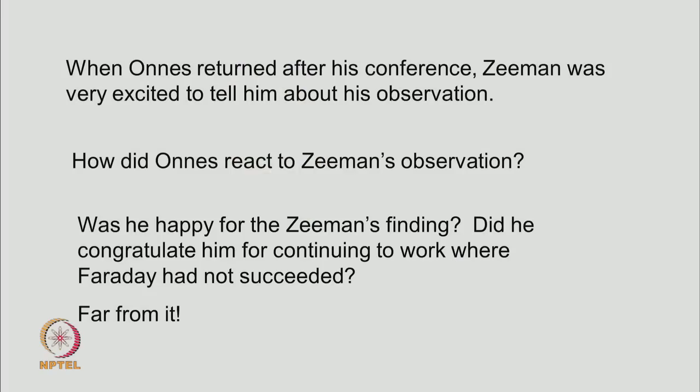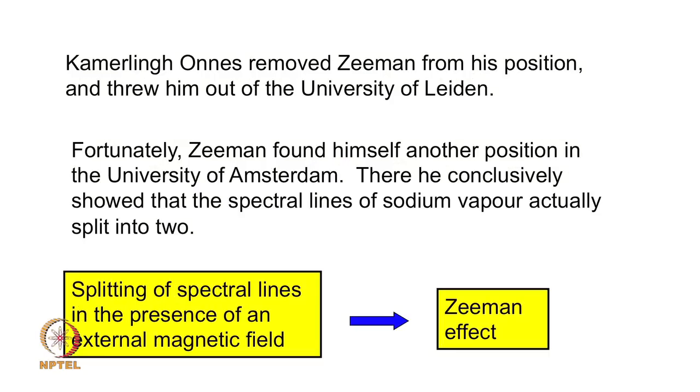He was very excited about it, but how did Owens reacted to the Zeeman's excitement? Was he happy that Zeeman found something exciting? Did he congratulate him that he saw some effect which even Faraday could not see? Far from it. He was in fact very angry with Zeeman for not listening to him, for wasting his time, probably even using the magnet without his permission. So, he simply threw him out of his laboratory. He fired him.